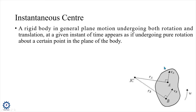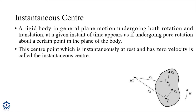Consider an arbitrary shape body which is rotating or which is undergoing general plane motion. General plane motion means it undergoes both rotation and translation. It is rotating with angular velocity omega. Now at a particular instant, this body can undergo pure rotation about a certain point. We call that point the Instantaneous Center — the point about which the body appears to undergo pure rotation at a particular instant.